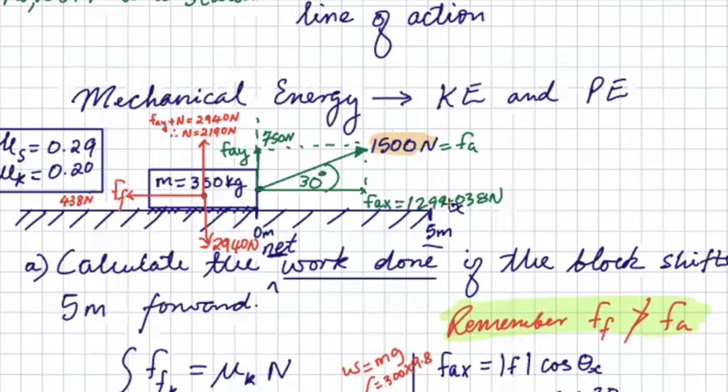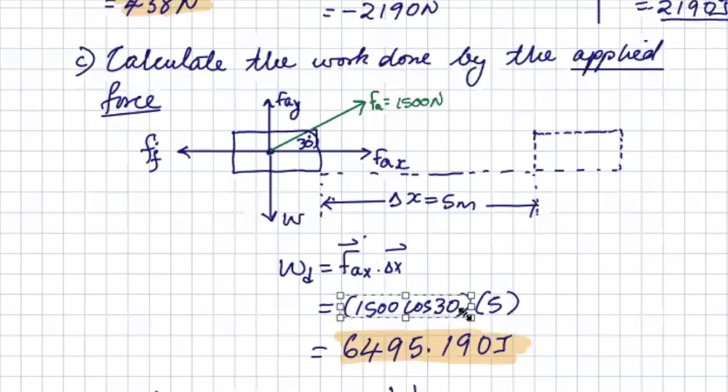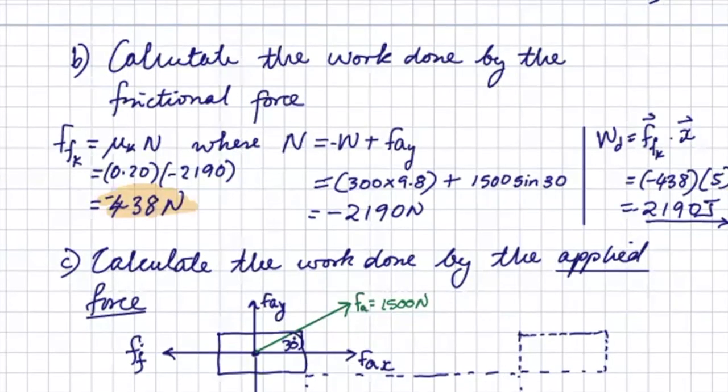So the force that we'll be using is 1299.038 fax, multiplied by the 5 meters. So if you get the difference between those two, total work done basically will be the work done by the applied force minus the work done by friction.